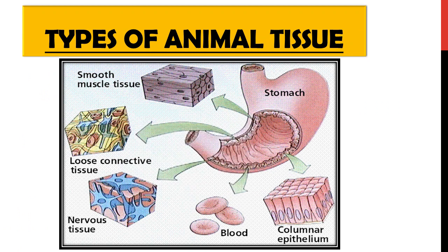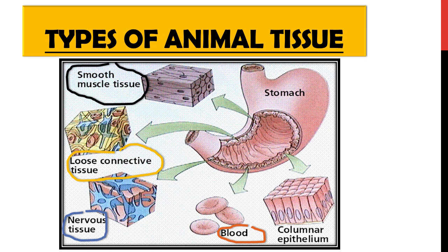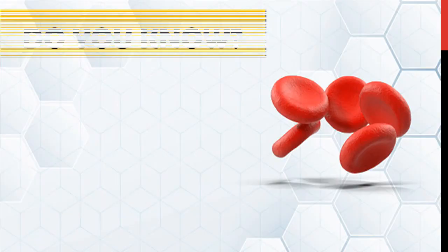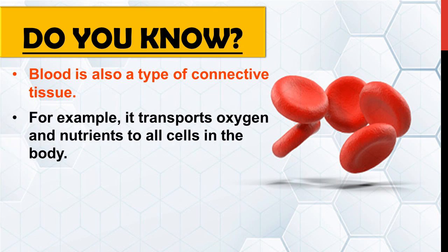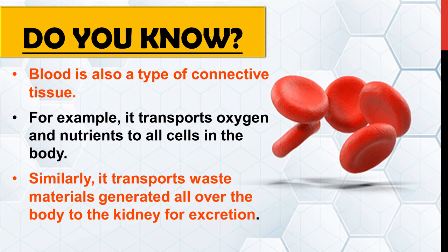In the stomach, for example, we have smooth muscle tissue, loose connective tissue, nervous tissue, blood cells, and columnar epithelium — all of which we will study in detail later. Blood is also a type of connective tissue. It circulates in our body from one part to another, transporting oxygen and nutrients to all cells in the body, and also carrying waste material to the kidney for excretion.